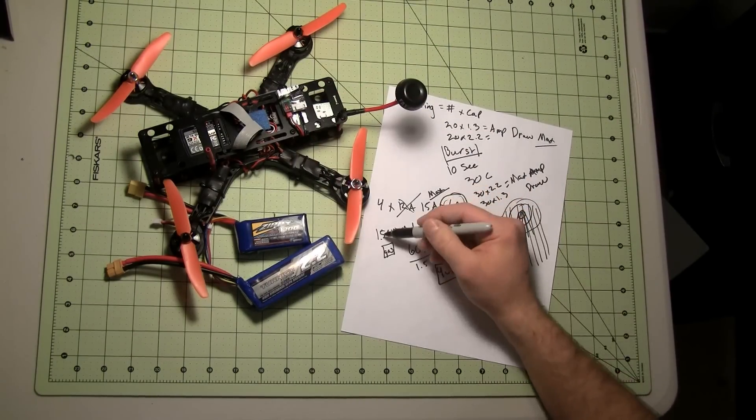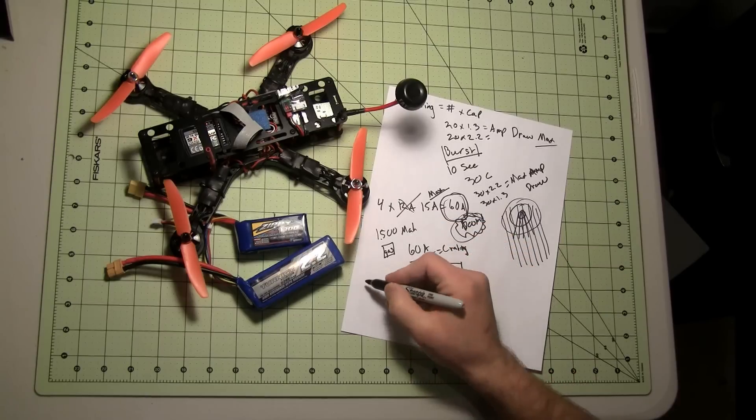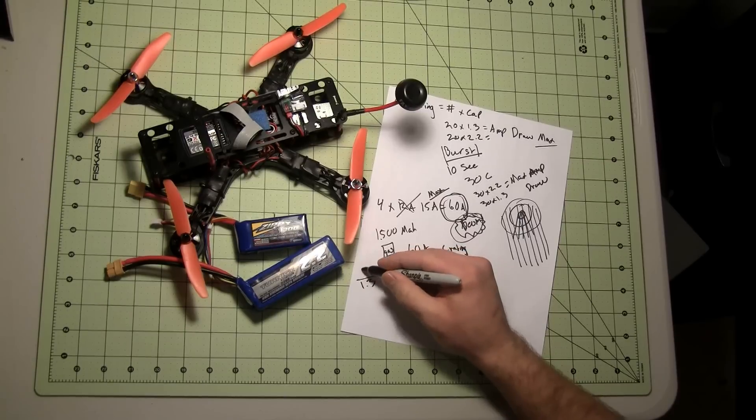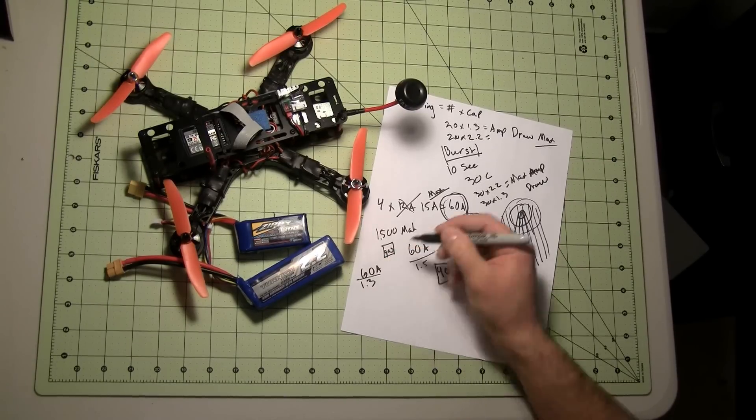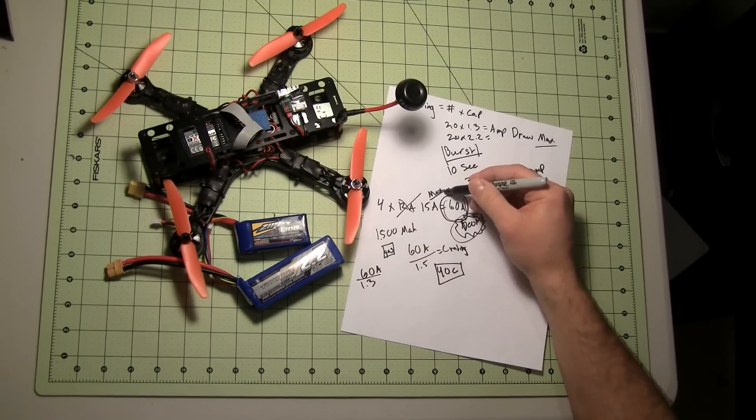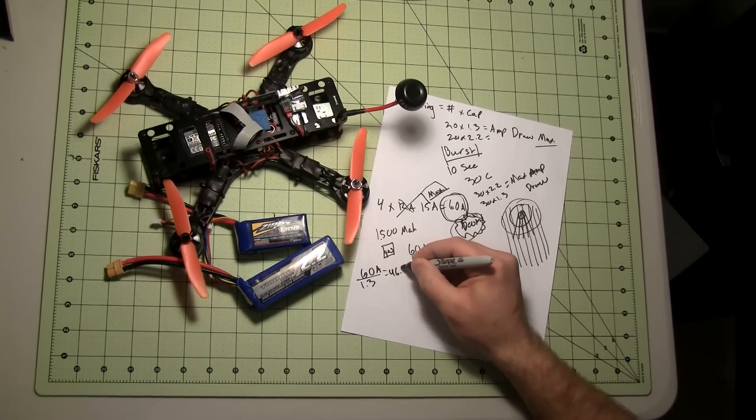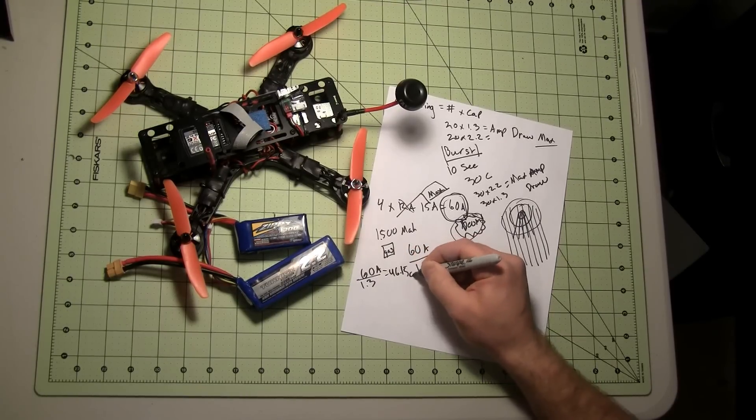So if I wanted to go a slightly smaller battery, 1300 let's say, that would be 1.3 amps. I'd have to divide that by my 60 amp max, because I have 4 times 15 max.